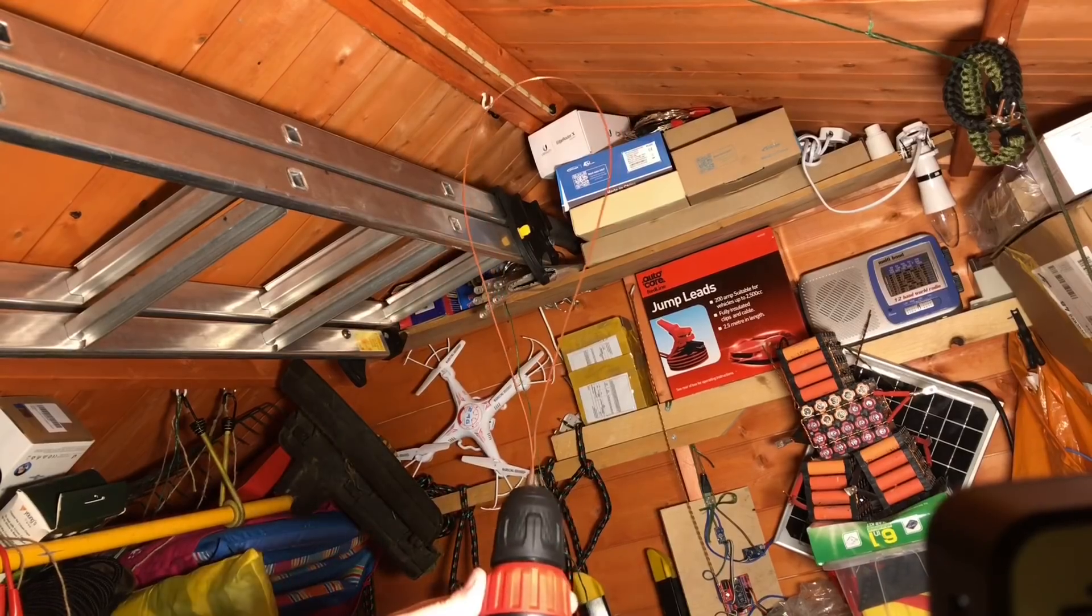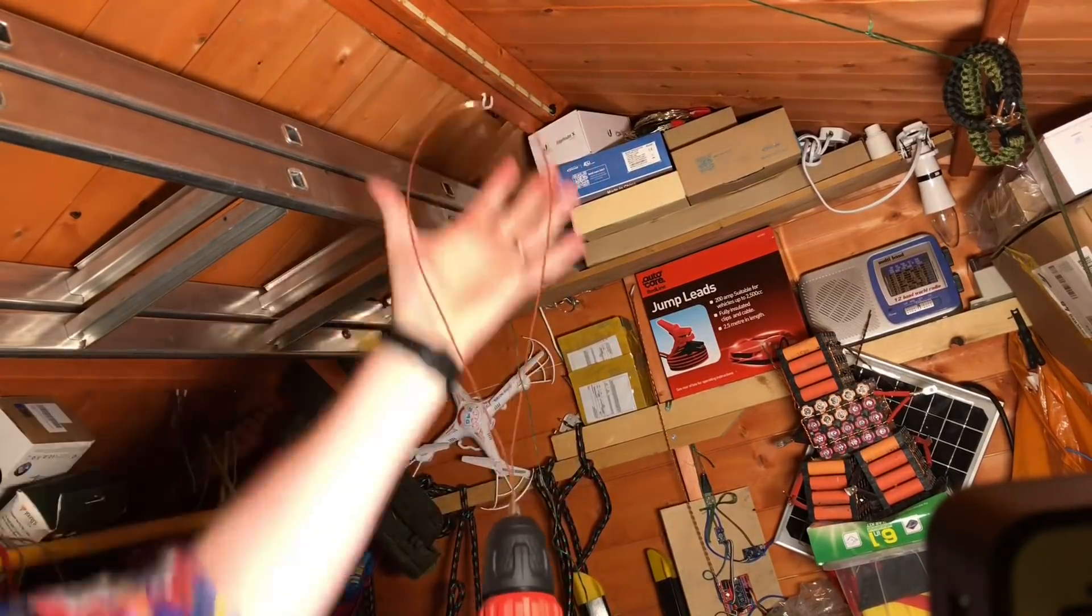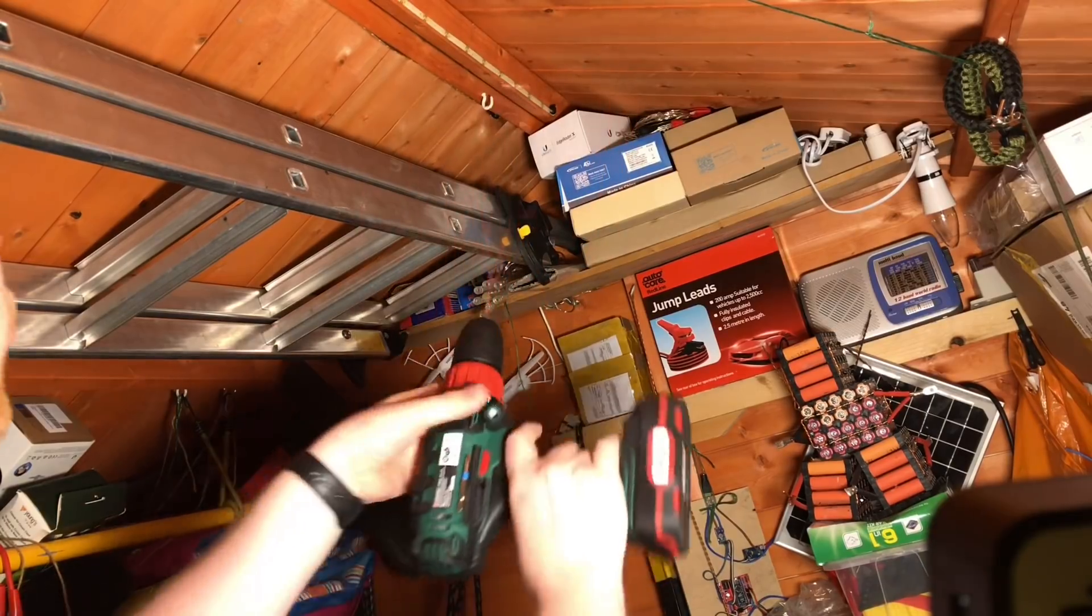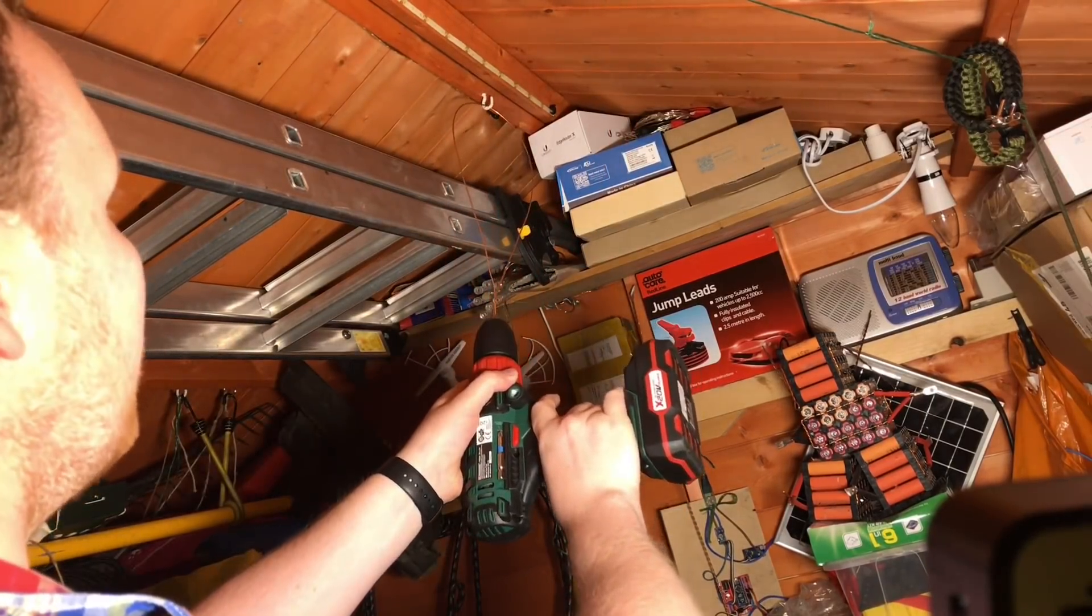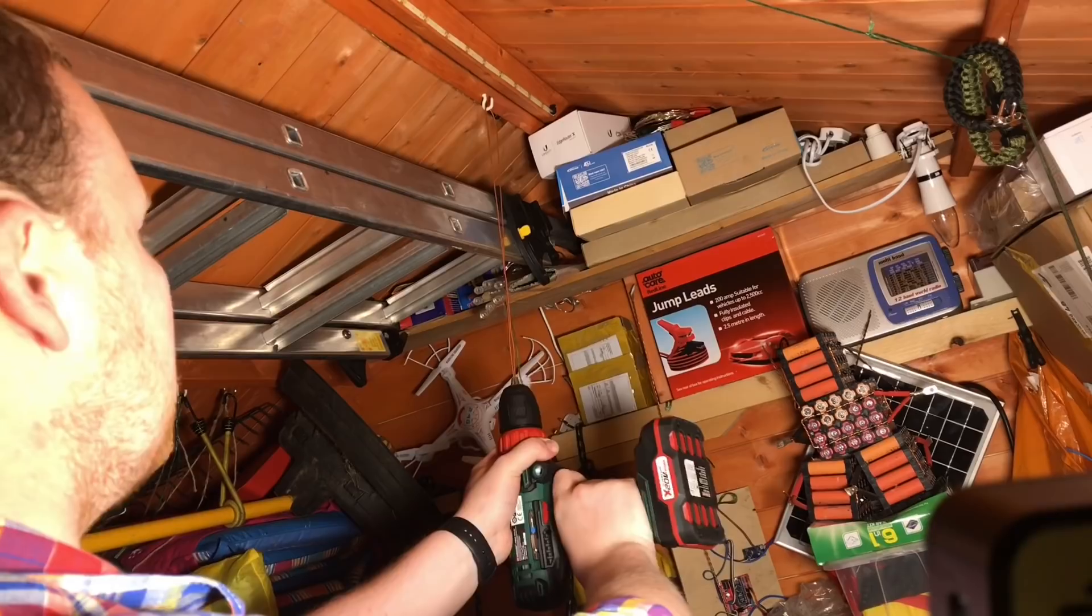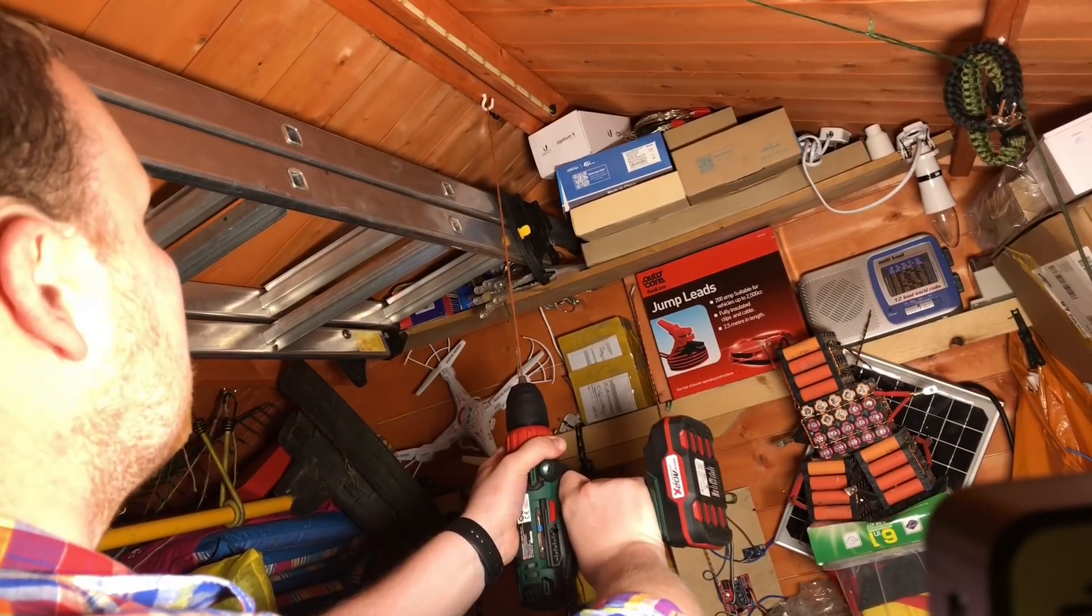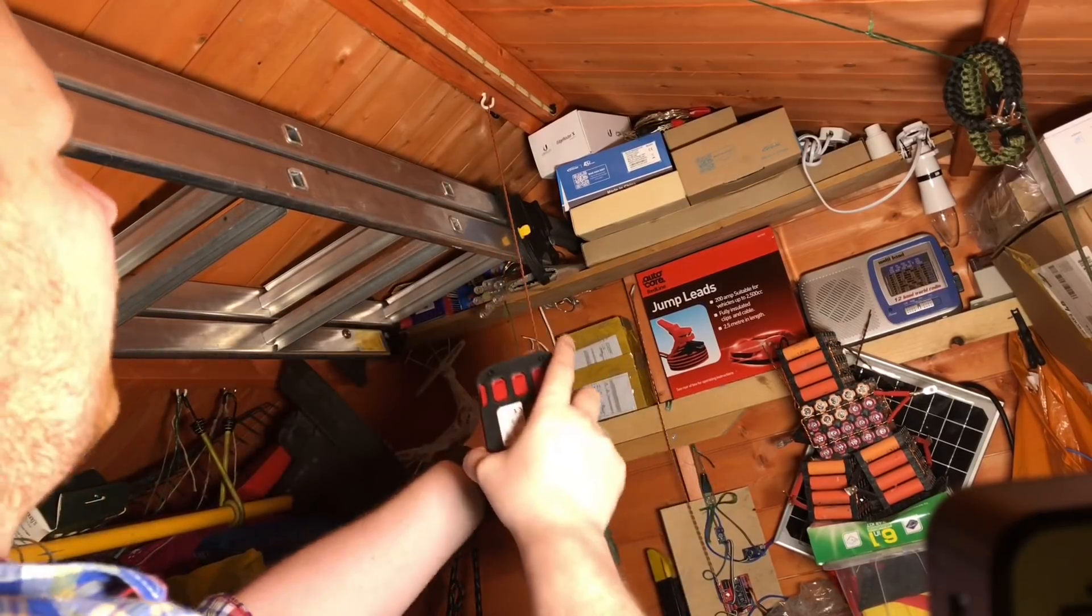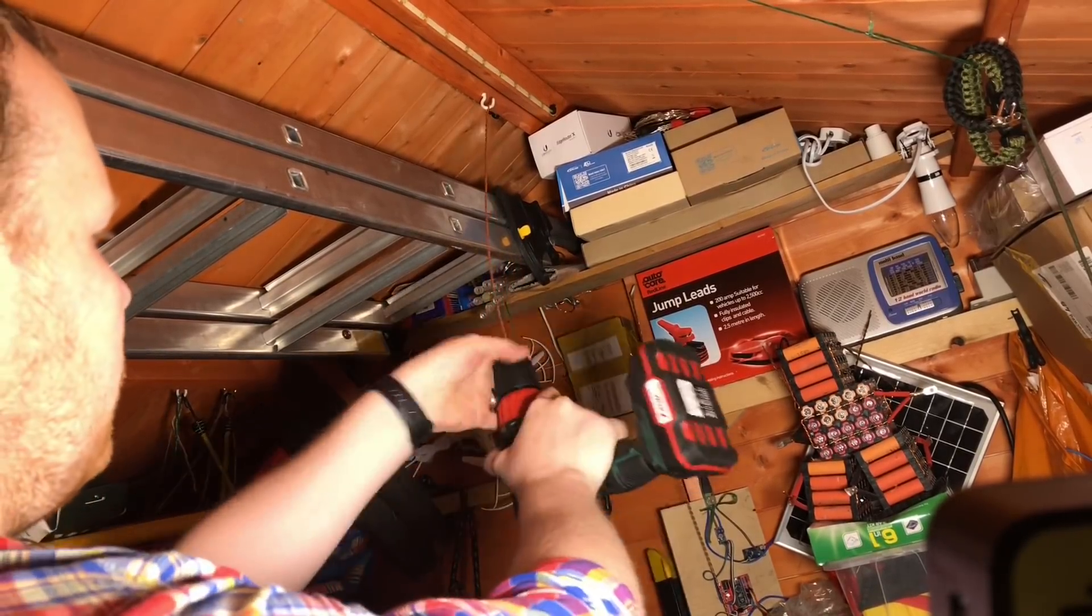The very simple method I've been using in the shed is to fold over the lengths of copper here, tighten them up in my drill and hook them over a hook here in the shed and then we can just go twist until it feels about right and that does the job.